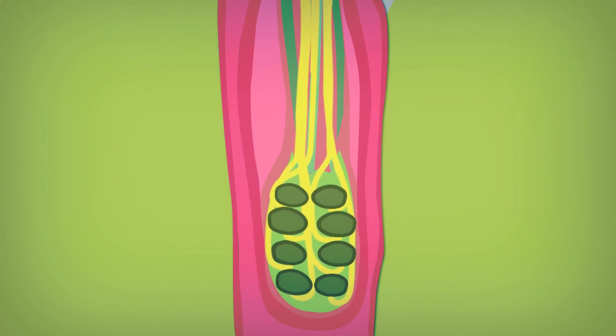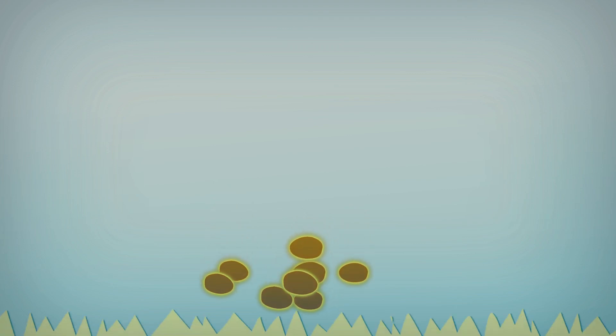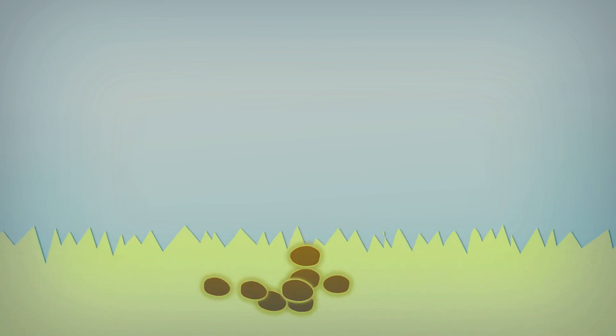Through insect pollination, ovules are fertilized by a mixture of pollen from several flowers. The genetic diversity of the offspring will be substantially increased.